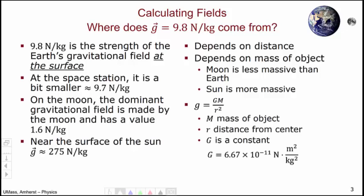It turns out that the strength of the gravitational field is actually calculable using this expression: G equals big G, M over R squared. Where M is the mass of the object, which is one of the things that G depends on. A more massive object will result in a larger gravitational field. It also depends upon the distance from the center, because the further away I get, the smaller the strength of the gravitational field. This big G quantity is just a constant of the universe, like the speed of light is a constant of the universe. The value of this big G constant is 6.67 times 10 to the minus 11.